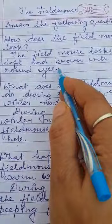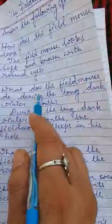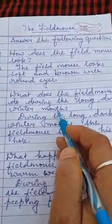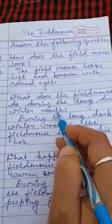Now we are talking about number 2 question. Number 2 question says: what does the field mouse do during the long days of winter month? That means, the field mouse is seen during the summer time — what does he do in the winter time? We will start with the statement in the question itself.